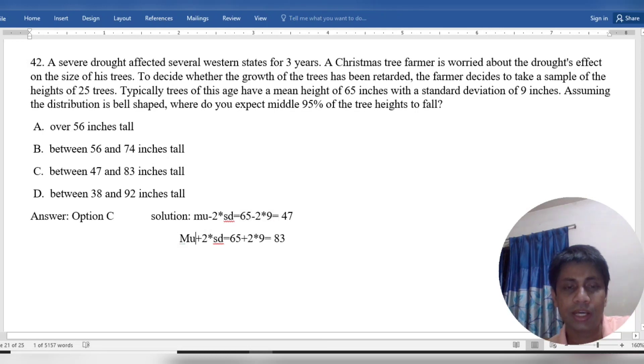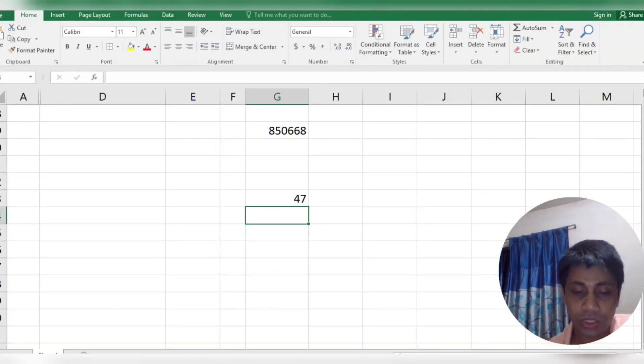And mu plus two standard deviations is 65 plus 18, which equals 83.